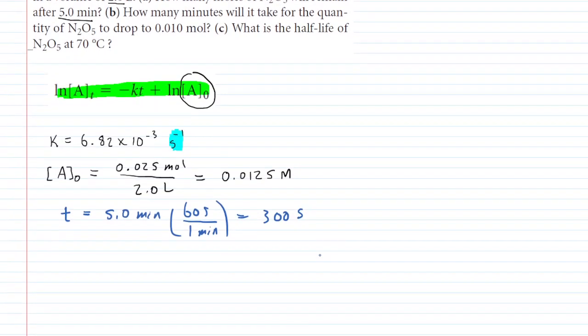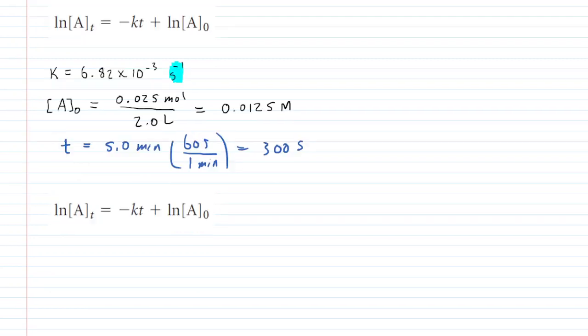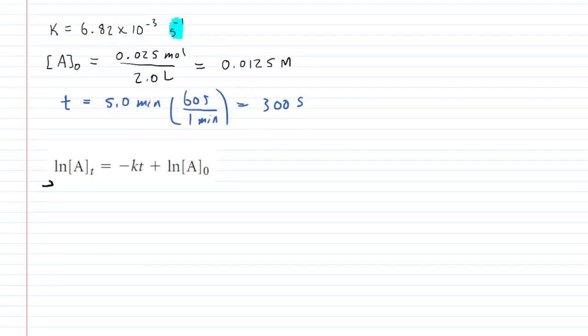Now, to get the moles after 300 seconds, we're essentially looking for the final concentration. We're going to figure out that concentration and then change that into moles at the end. Some students find it useful to isolate what they're solving for first. So we're going to go ahead and do that by rearranging this equation. And then to solve for that final concentration, what we do is we raise E to both sides of this equation.